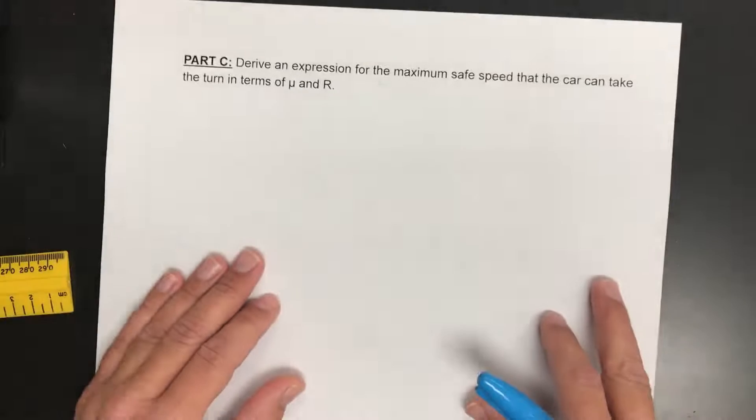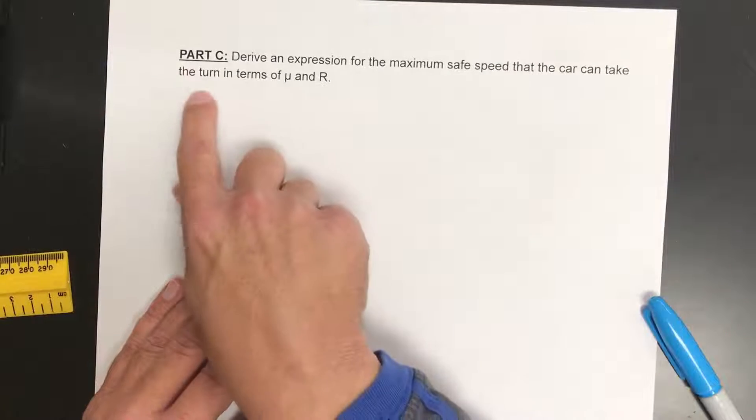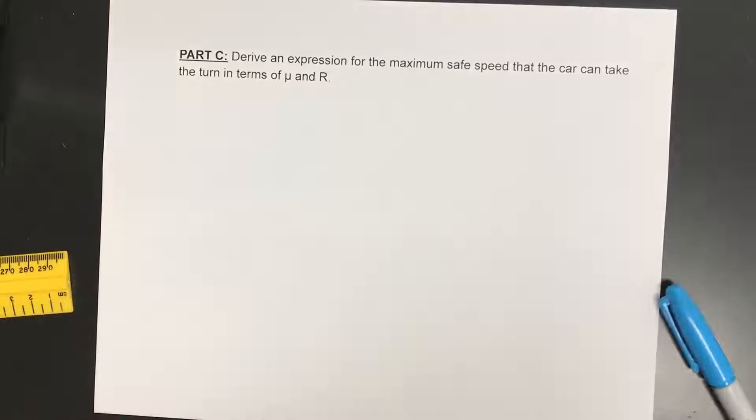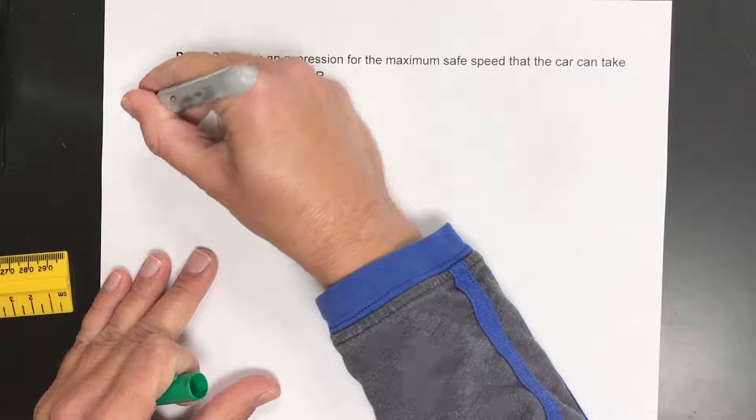So next part then, they say derive an expression for the maximum safe speed the car can make in terms of mu sub 0 and r. So here we're finally going to get an equation. Remember this, always start off all your centripetal problems like this.